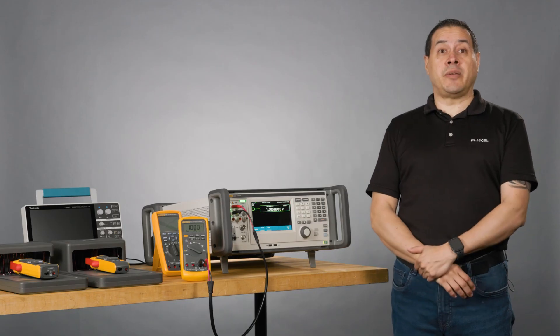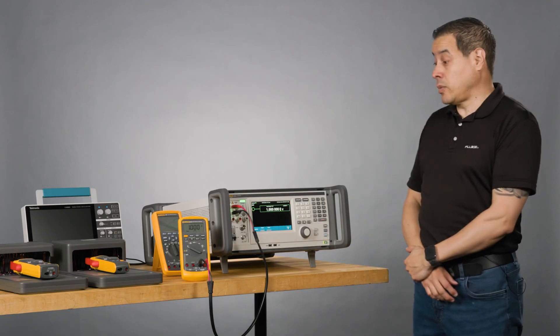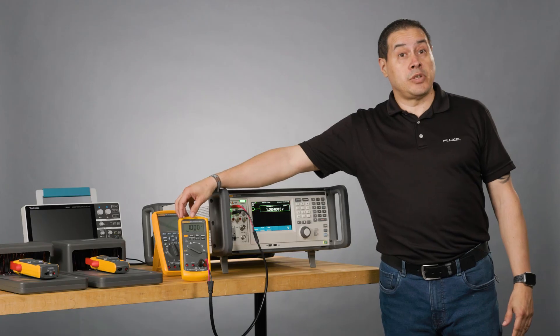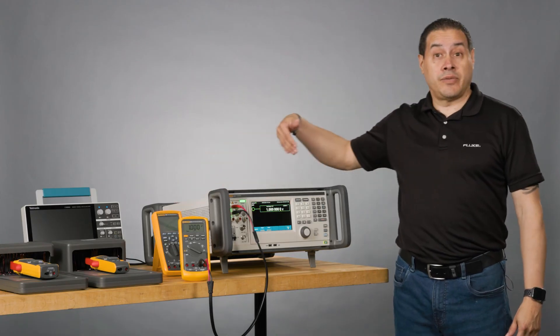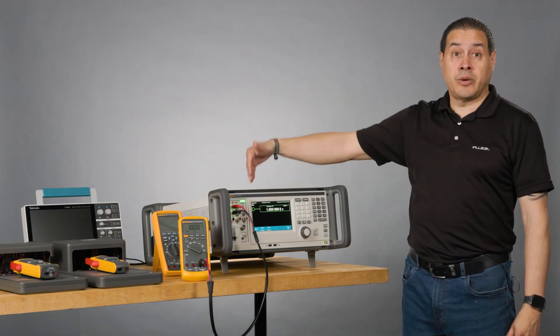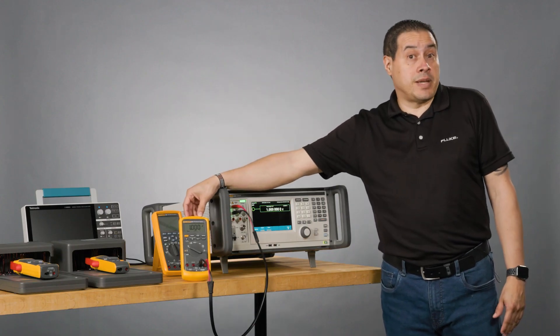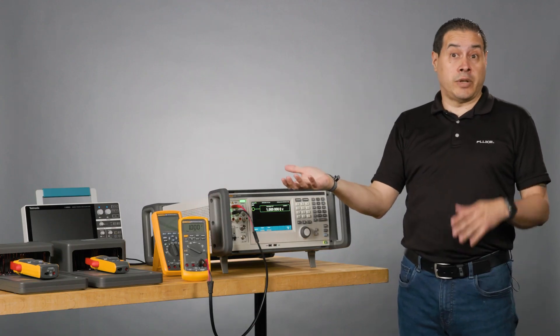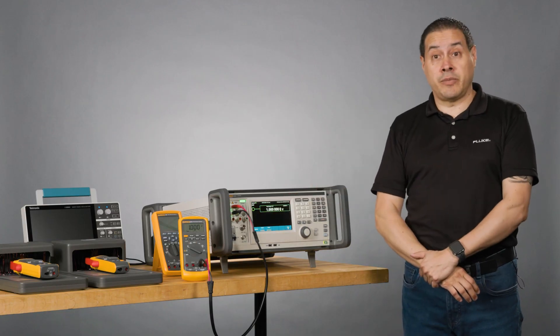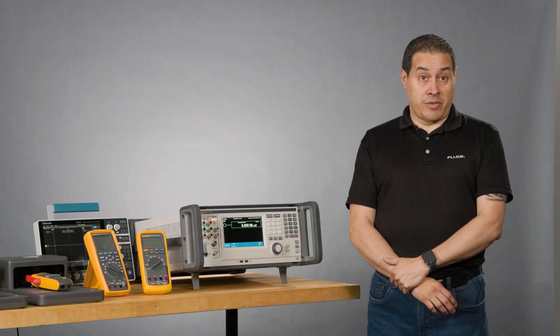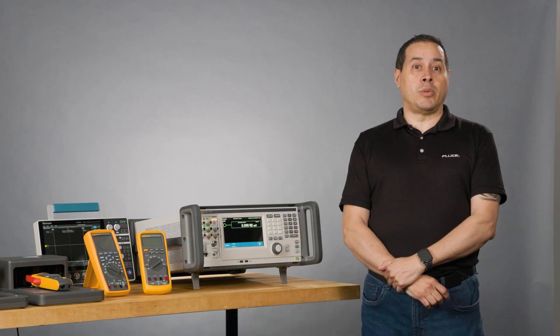So the purpose of calibrating a DMM is basically comparing a known source with my unit under test to check if I have an error and how much is the error and how my unit is performing in the field. So that's basically comparing a known value with an unknown value. And that's what calibration is. Well, that's it. If you have any questions, go to fluke.com and we will be happy to help.